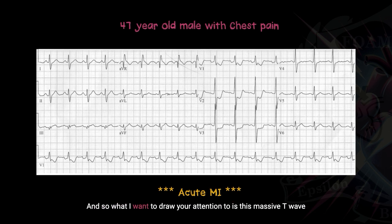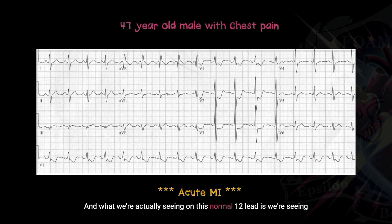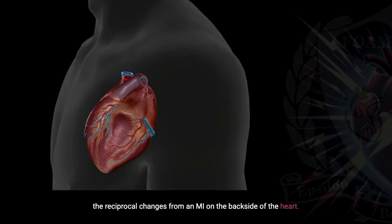What I want to draw your attention to is this massive T-wave and ST-segment depression with T-wave inversions in V1, V2, and V3. What we're actually seeing on this normal 12-lead are the reciprocal changes from an MI on the backside of the heart.